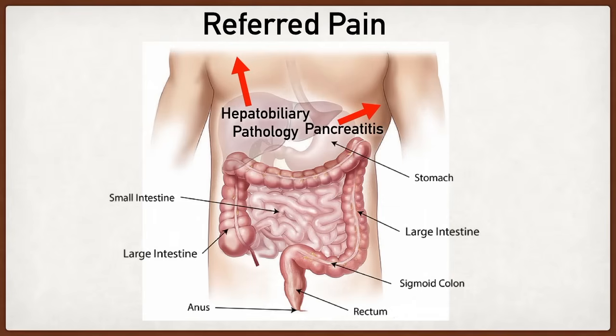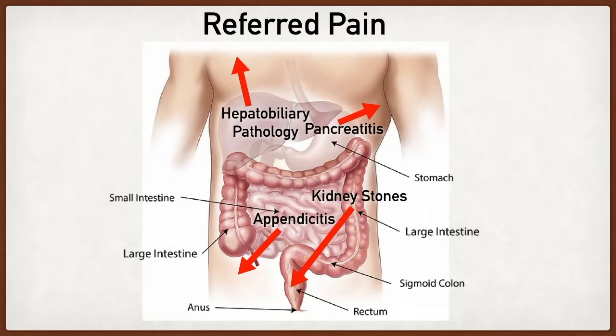Appendicitis is another good example where pain can migrate. Early on, appendicitis can present as generalized or peri-umbilical pain, and as it progresses it migrates down to the right lower quadrant. Kidney stones are another example — patients commonly complain of flank pain that radiates down to the groin.